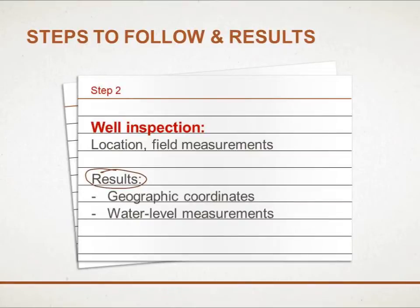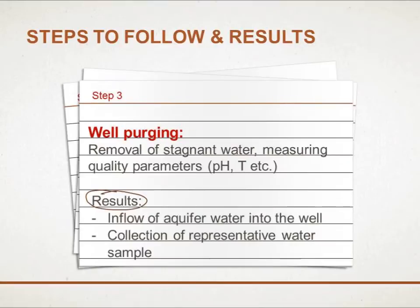well inspection, takes place on site. The objective here is to determine geographical coordinates and take water level measurements. Another step takes place prior to sampling: well purging. Field quality parameters need to be measured beforehand in order to ensure the collection of representative samples.